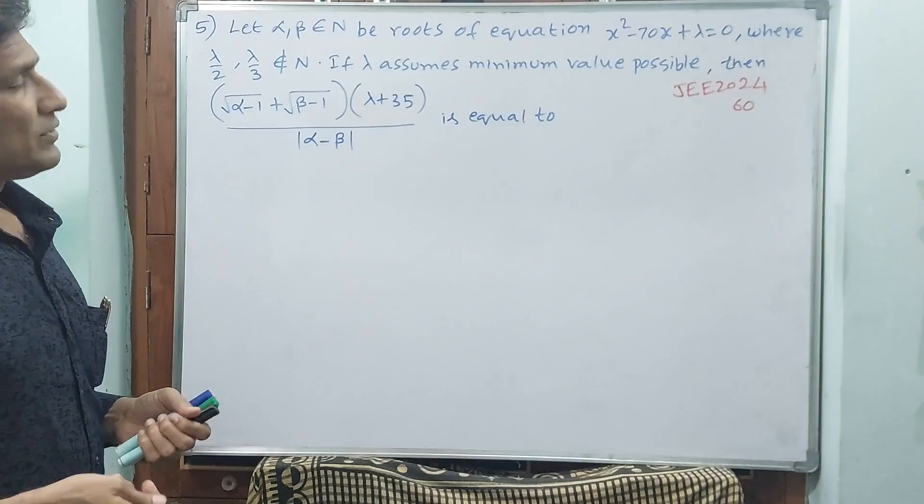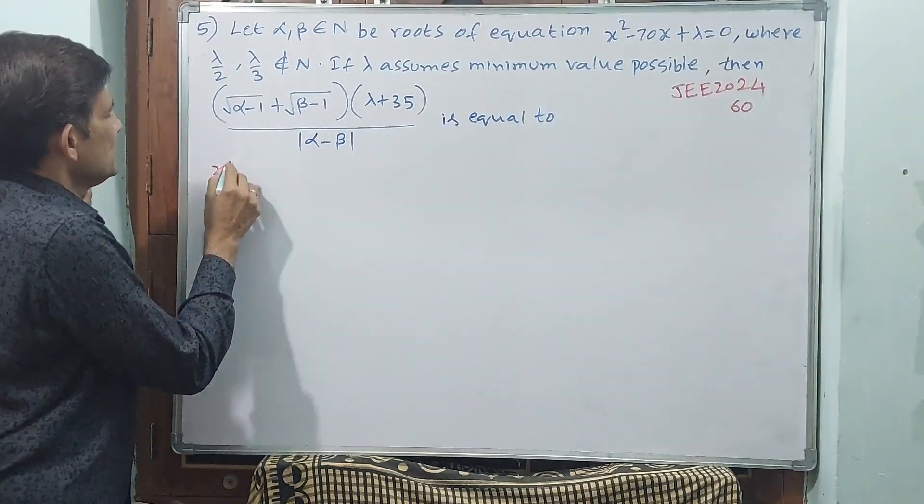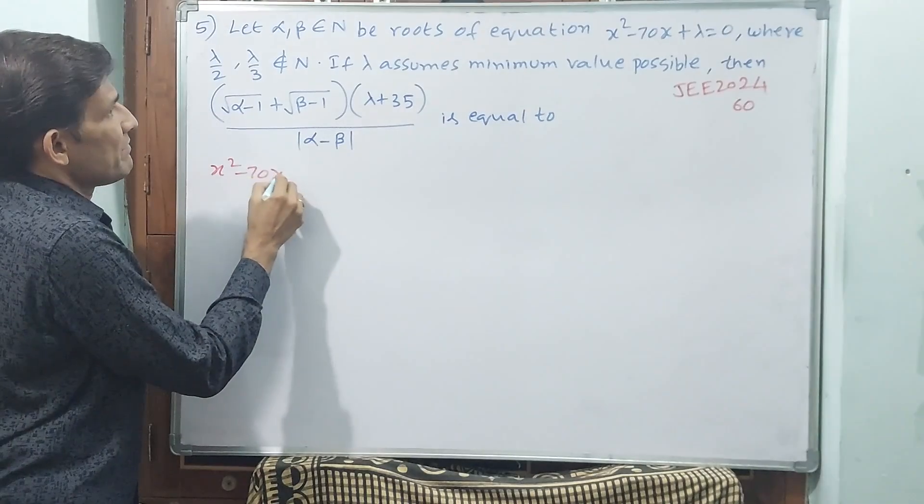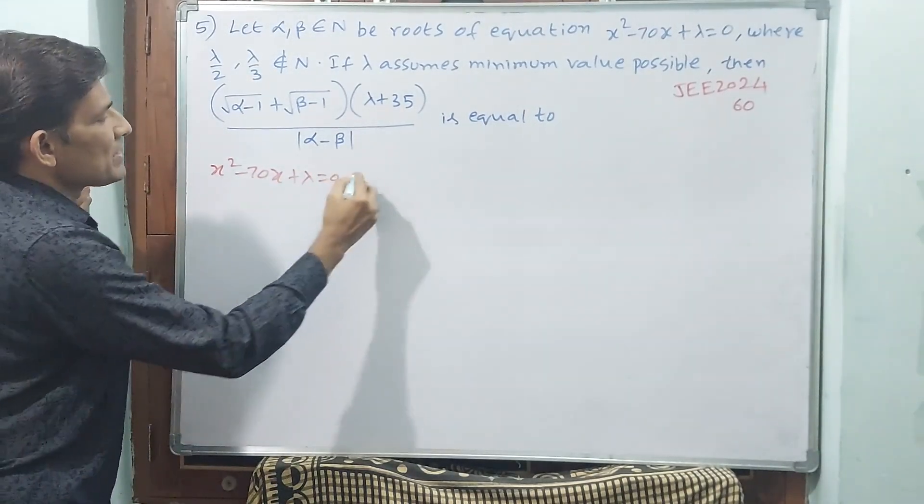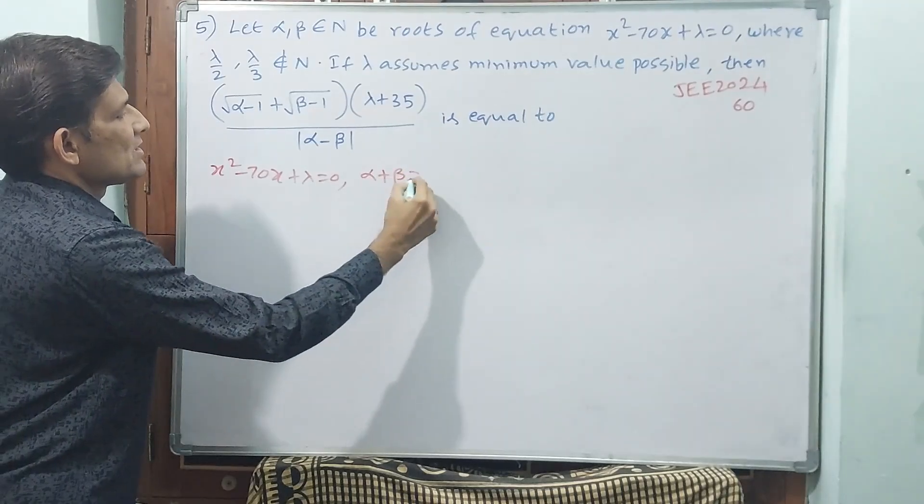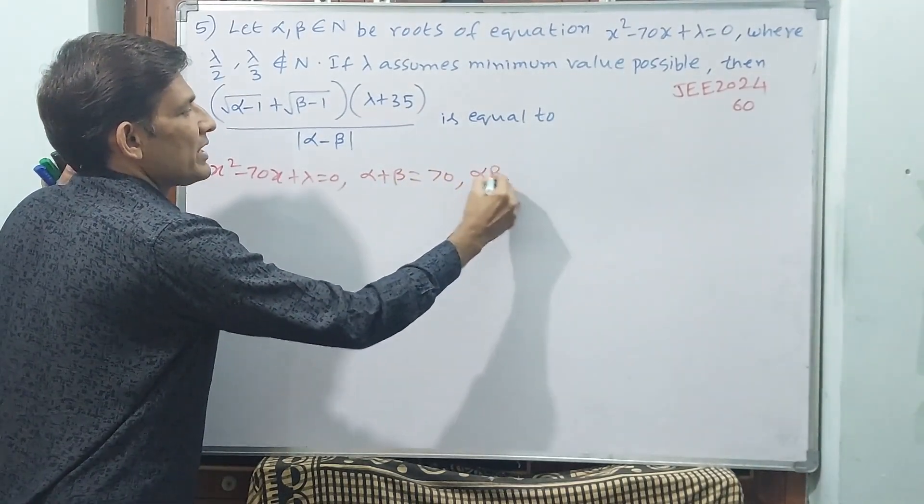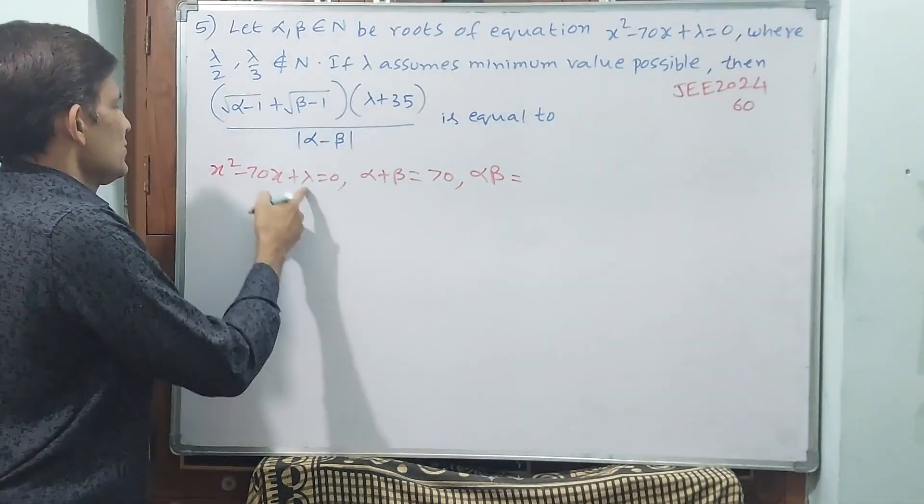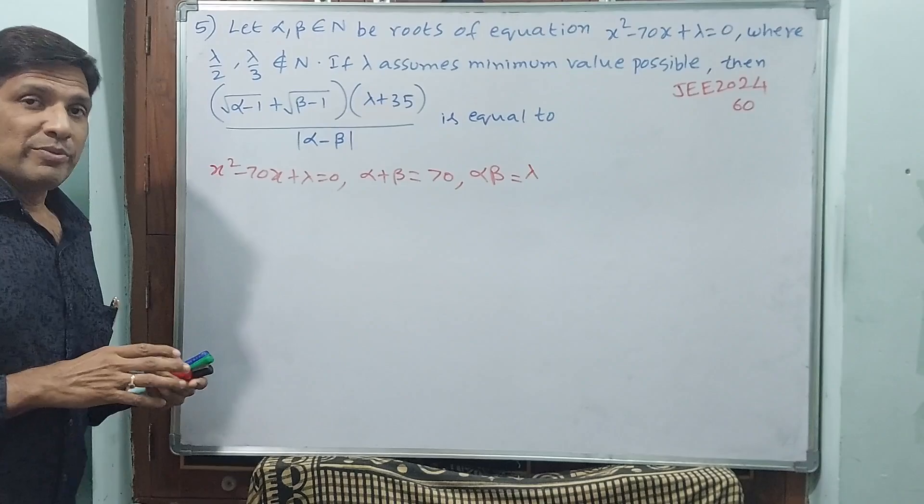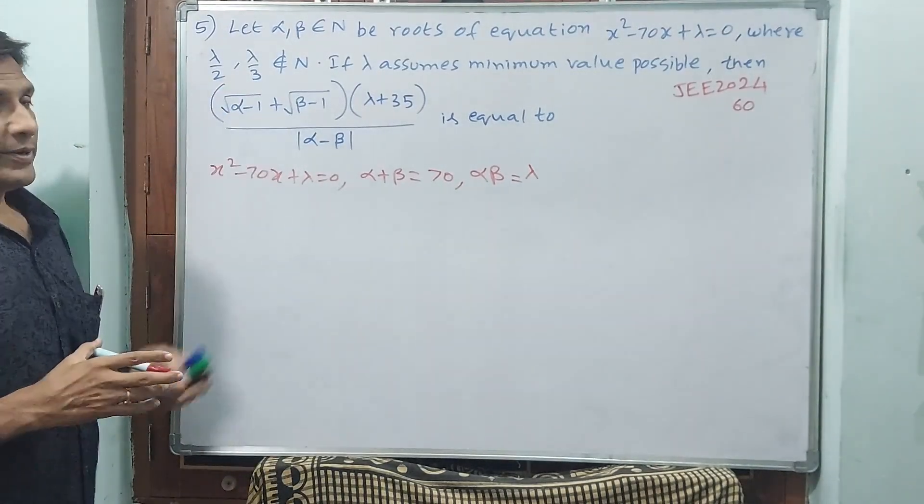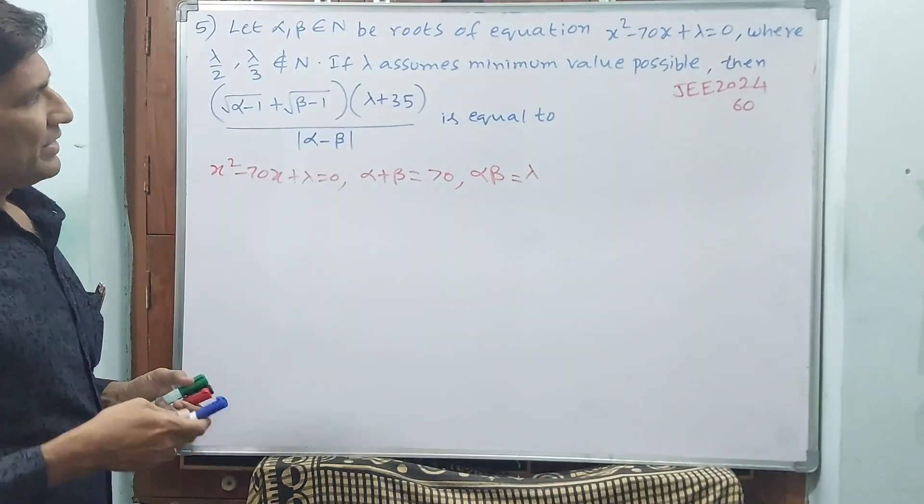See how we are going to achieve this. First of all, let me write the equation once again: x² - 70x + λ = 0. See here, α + β equals what? -b/a, which is 70. α × β equals c/a, which is λ. That means α × β should not be divisible by 2 or 3, and α + β should equal 70.